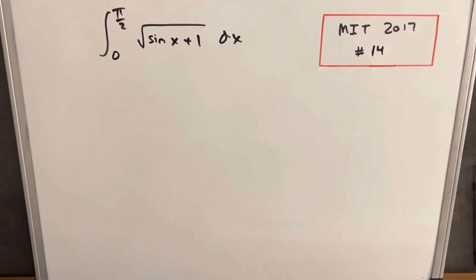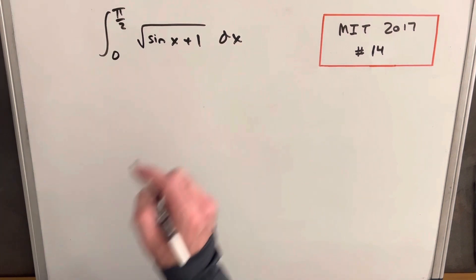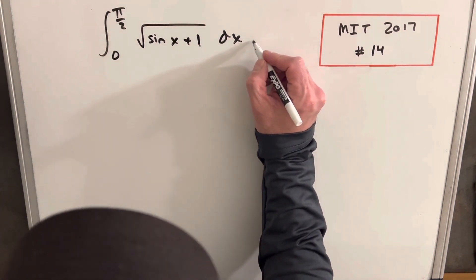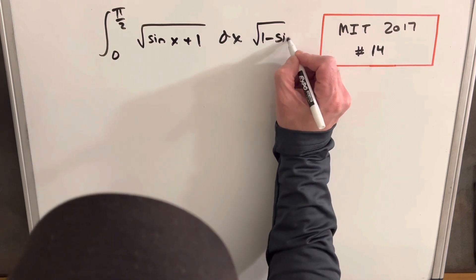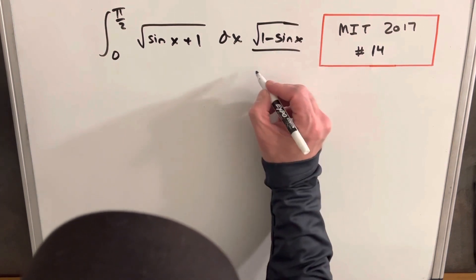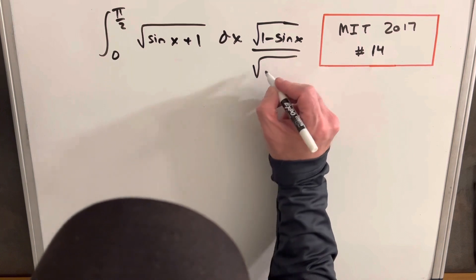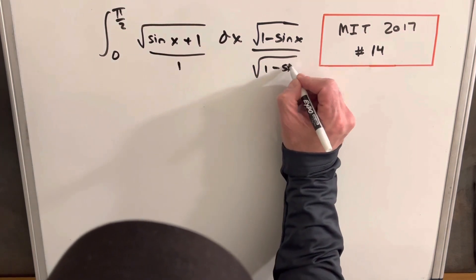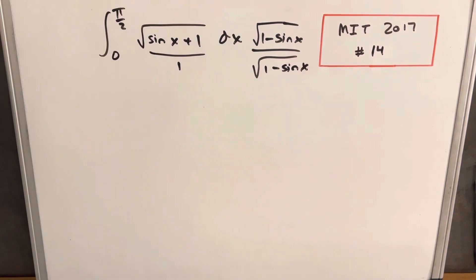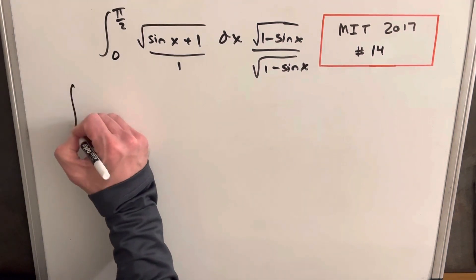I think a u substitution would work. What I want to do is just see if I can manipulate this to get it into something a little more manageable. So what I'm going to do is multiply essentially by 1, but we'll multiply the numerator and denominator. There is no denominator, but we can make a 1 there. We'll multiply it by the square root of 1 minus sine x over 1 minus sine x. And let's see what this does for us.